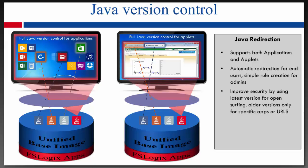We can also improve security. For any of your legacy applications, we have a certain version of Java assigned to those, and then anything that doesn't have a specific version assigned can always use the latest version of Java. Just like our unified base image, you install all the versions of Java into the image — no packaging or sequencing needed. You create your rules based on the URL or application, and if it doesn't have a Java rule assigned, the catch-all will be to use the latest version of Java.